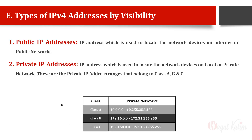The last classification of IP addresses divides them into two types: public and private. A public IP address is given by your ISP and is assigned to networks or devices that are facing the internet. A private IP address is what we use at our homes or offices. Public IP addresses are used to locate network devices on the internet or public networks, while private IP addresses are used to locate devices on local or private networks.